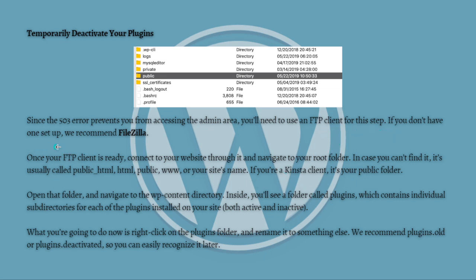If you don't have one set up, I recommend FileZilla. Once your FTP client is ready, just connect to your website through it and navigate to your root folder. In case you can't find it, it is usually called public_html, public, www, or your site name. If you are a Kinsta client, it is your public folder. Then open that folder and navigate to the wp-content directory.